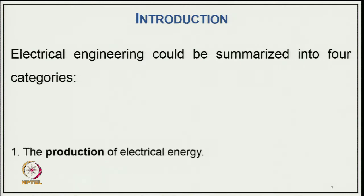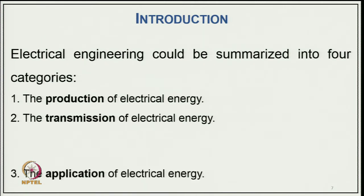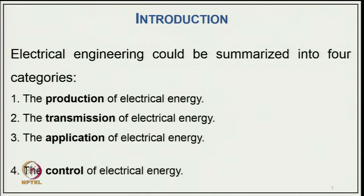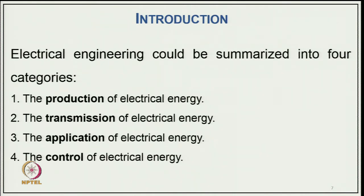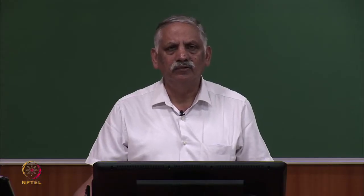Electrical engineering can be summarized in four categories: production of electrical energy, transmission of electrical energy, application of electrical energy, and control of electrical energy. The first three aspects are related to efficiency. The conversion from other forms — whether mechanical to electrical, transmission, or application back to mechanical — is very highly efficient compared to other forms of energy conversion.